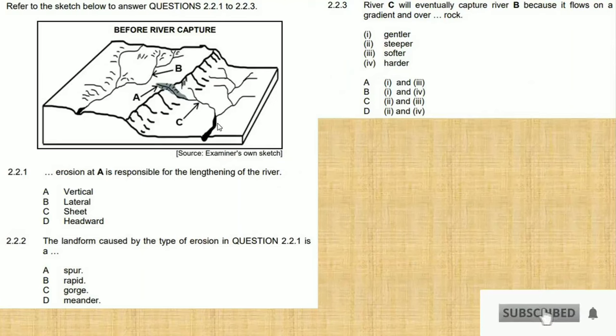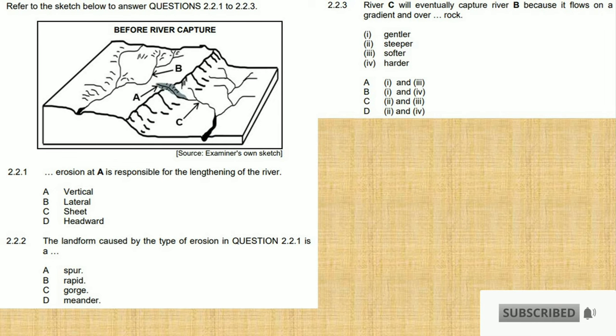Let's look quickly at these questions over here, the multiple choice from 2022 final paper, geographic paper one. So you have a diagram of before river capture takes place over there.